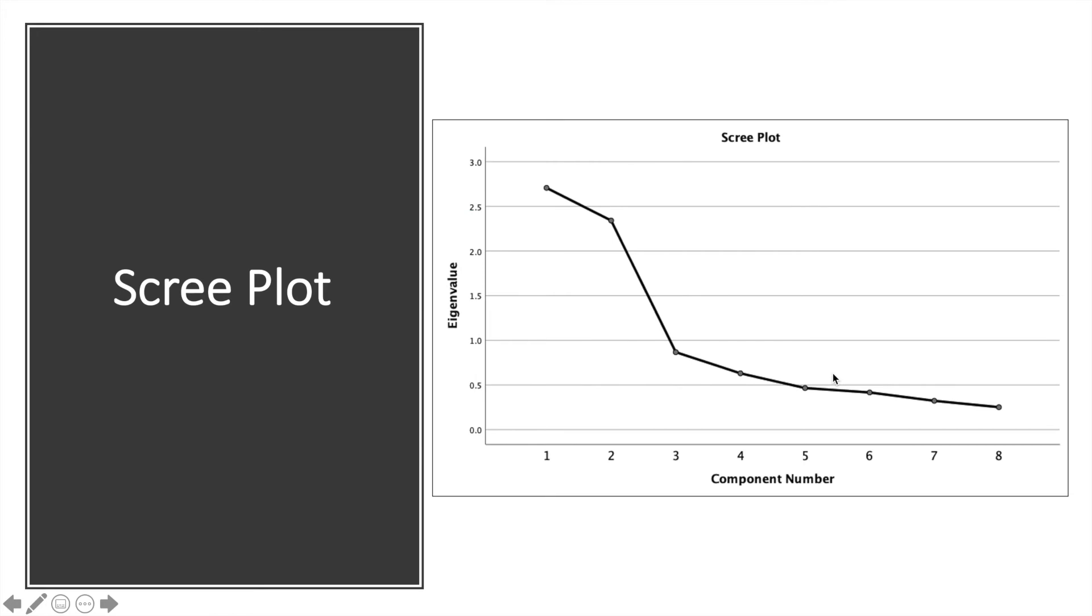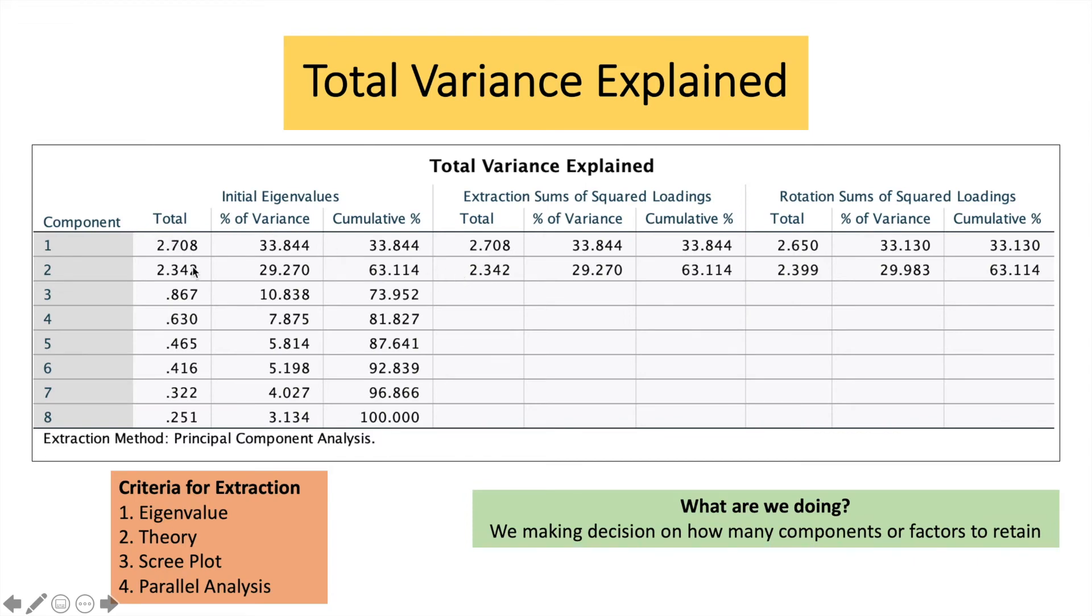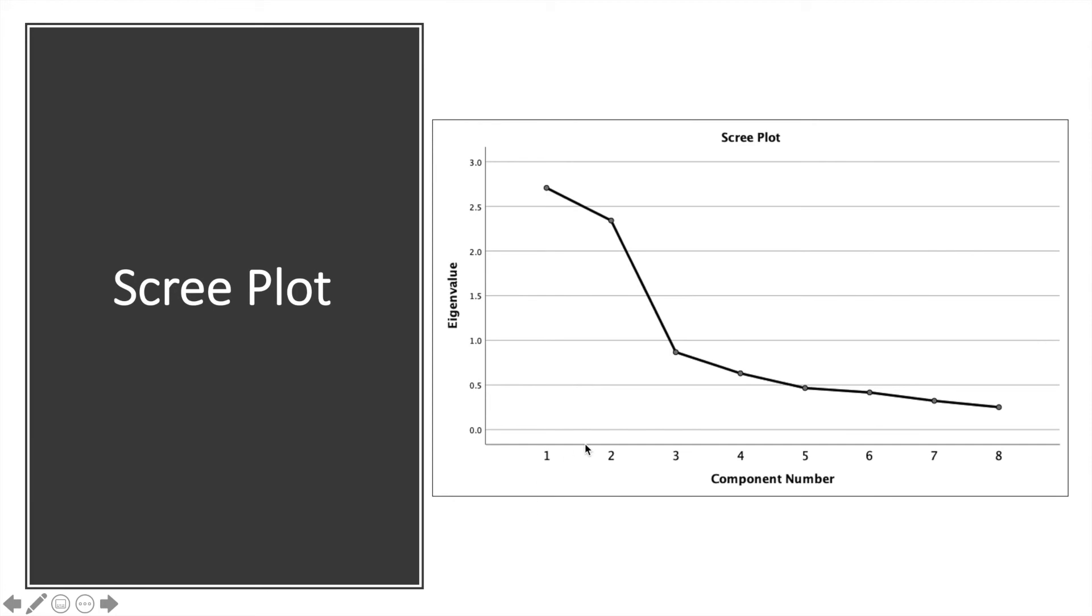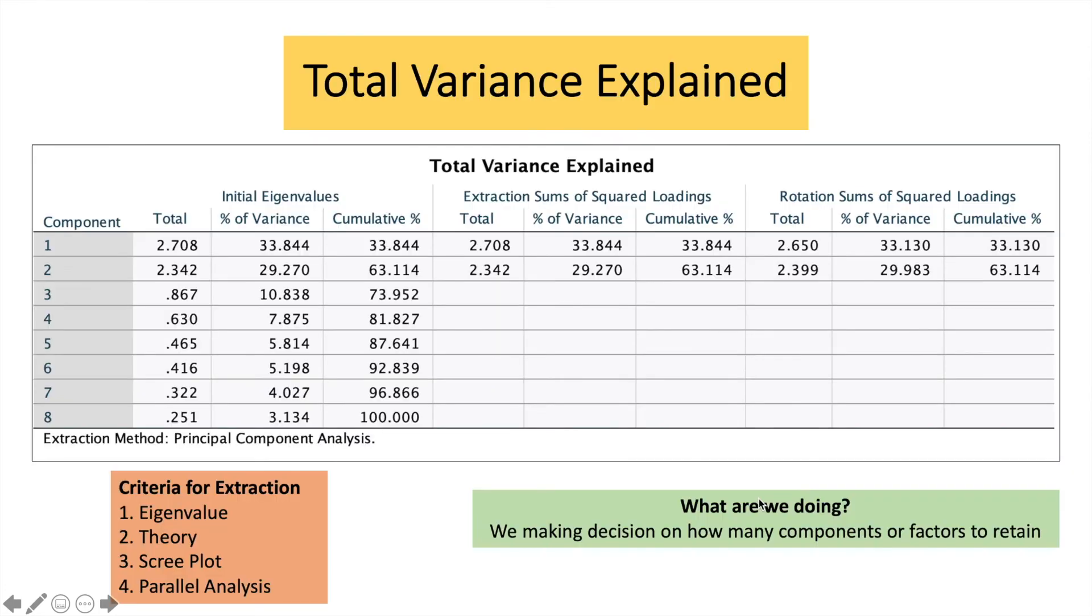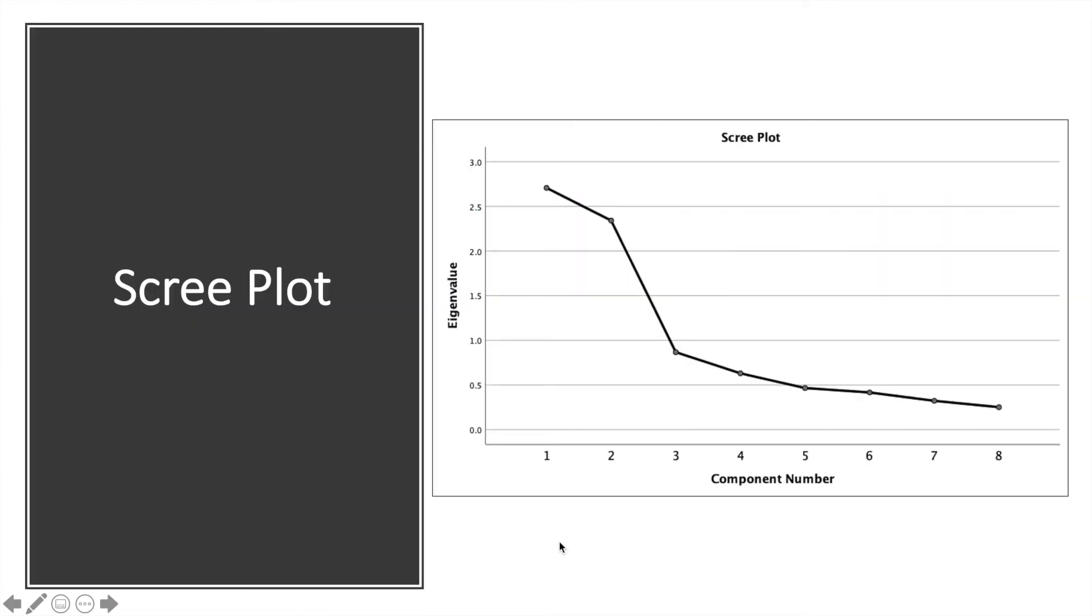So what is a scree plot? You can see on your y-axis, we have the eigenvalues, where we got the eigenvalues from here. And on your x-axis, we have your component numbers, where your component numbers is from here. So it's a plot showing a combination of your components and the eigenvalue. So how do we make our decision based on the scree plot?